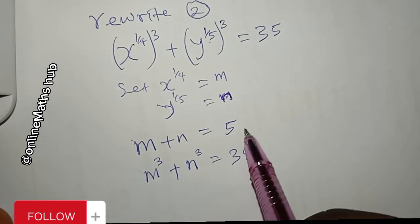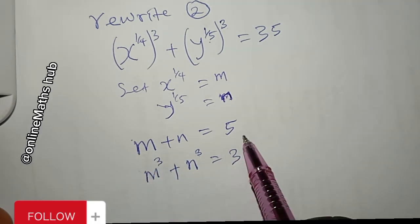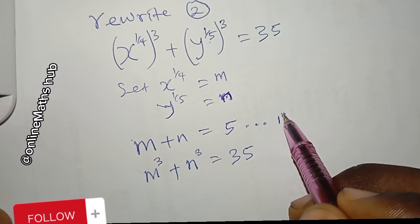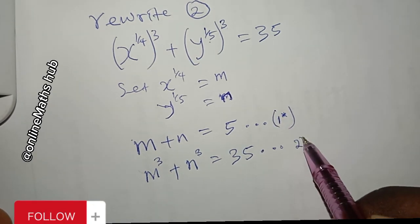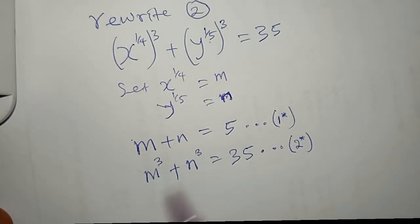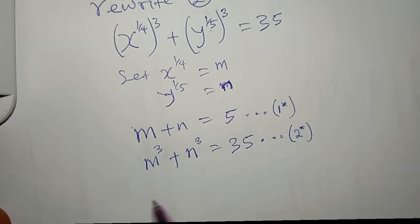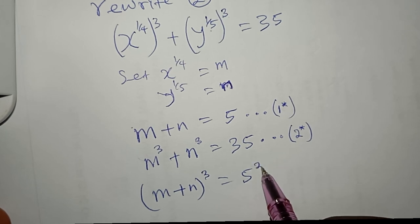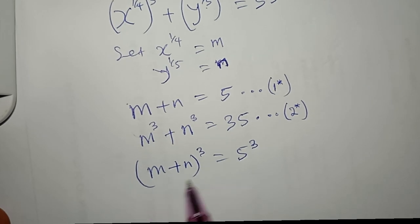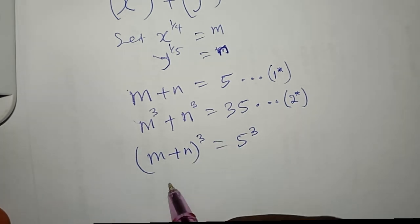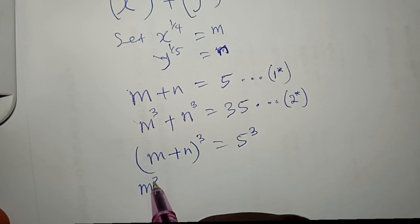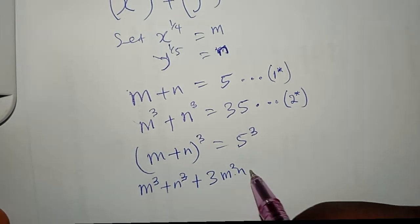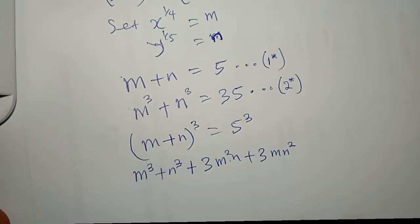The next thing I want to do is take the cube of equation 1. I'll call it equation 1-star. Expanding (m + n)³ gives m³ + n³ + 3m²n + 3mn².